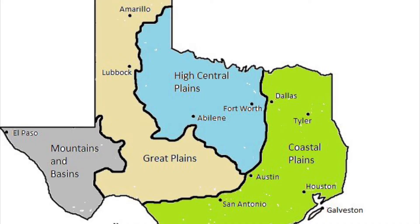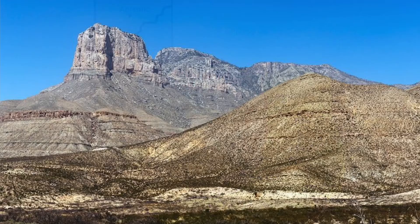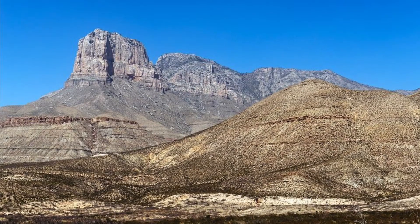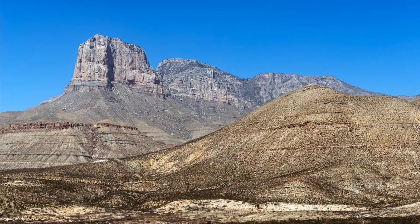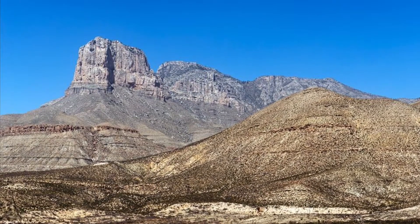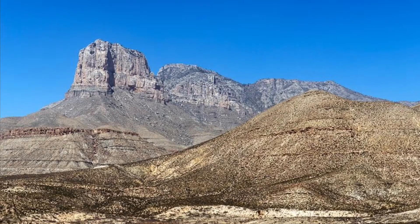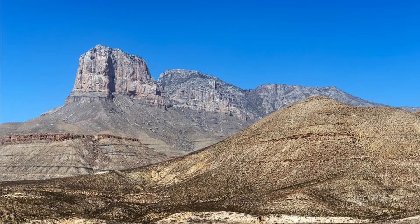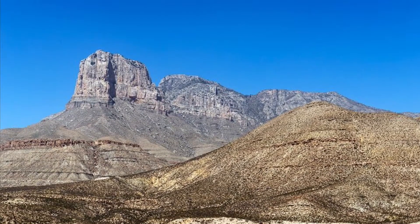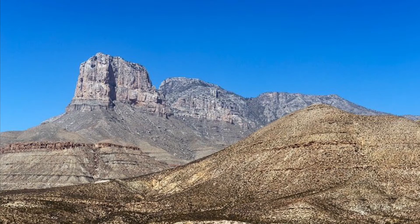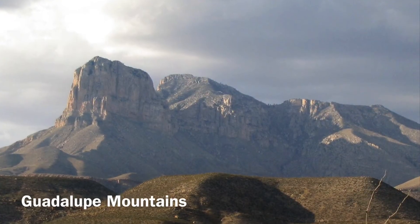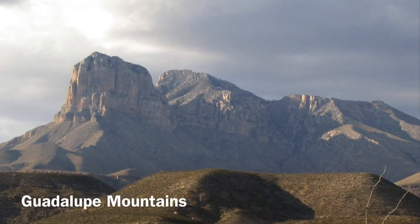The first region we're going to look at is the mountains and basins, located in far west Texas. This is a very rugged land. One of its main features are mountain ranges and peaks. The mountains and basins region has the highest elevation in the state, with seven mountains over 8,000 feet tall.